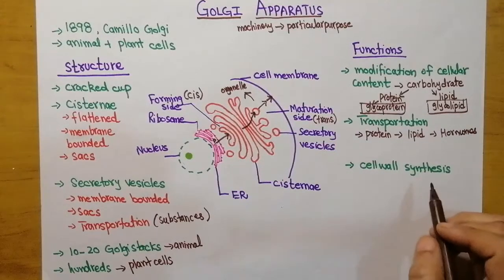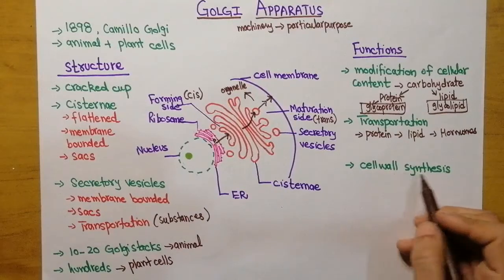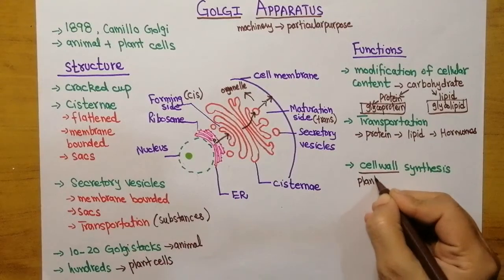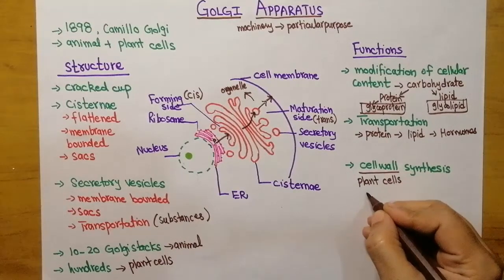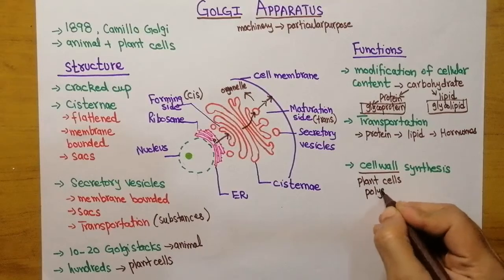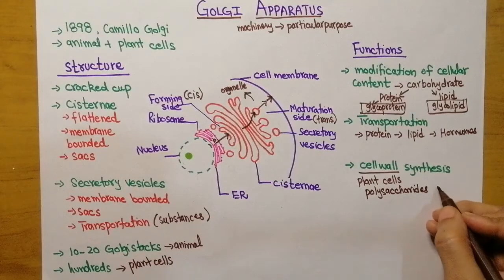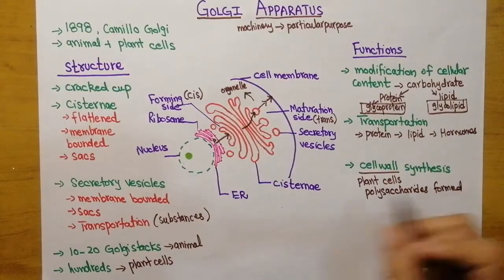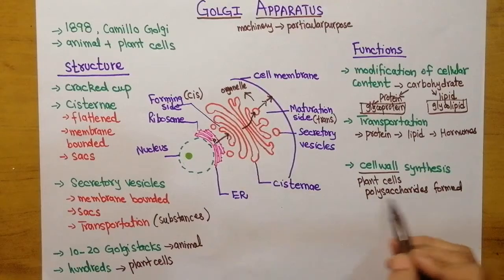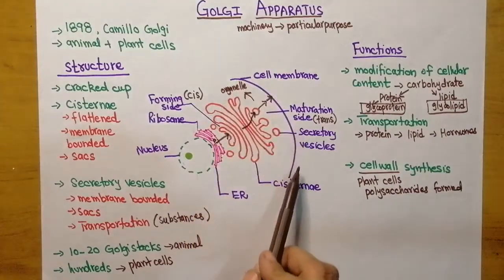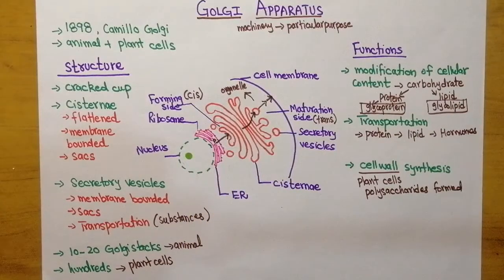The third function of the Golgi apparatus is cell wall synthesis, which is specially performed in plant cells. Polysaccharides are synthesized by the help of the Golgi apparatus, and these polysaccharides are then sent from the cell membrane to the cell wall for its synthesis. This was a brief introduction to the Golgi apparatus, its structure, and its functions.